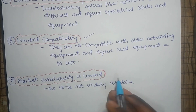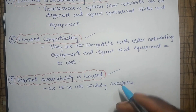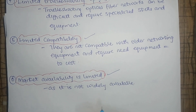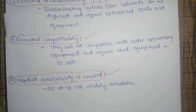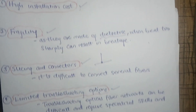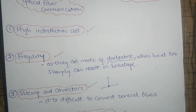The last disadvantage is the availability of optical fiber in the market. Copper wire is everywhere, but optical fiber is quite difficult to find in the market. I hope the concept is clear — if you have any questions, feel free to ask in the comment section. Goodbye!